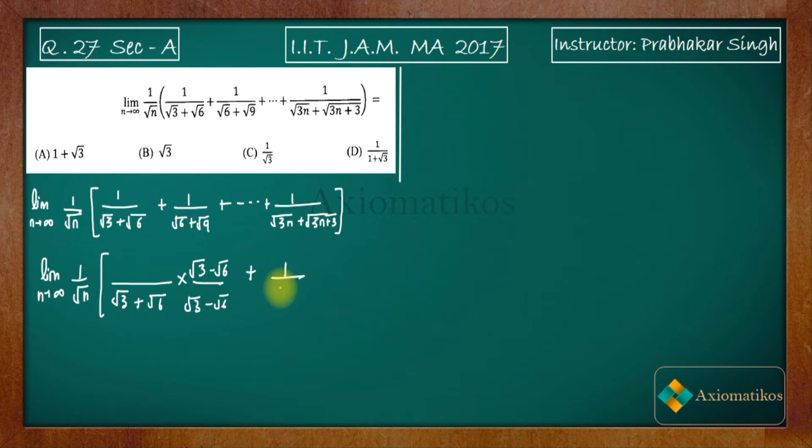So what I am doing is rationalizing every term. Just rationalize root 6 minus root 9, then you have root 6 minus root 9, and similarly you will do rationalization for all the terms which are written.